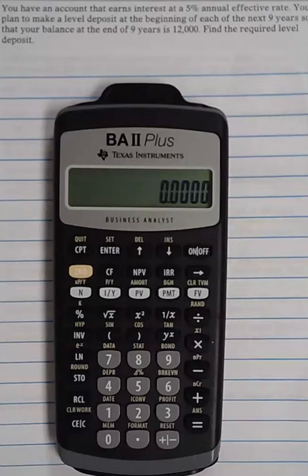We're going to use the calculator to help us solve an annuity due problem. In this case, we're given that the annual effective interest rate is 5%, and we want to know what level of deposits are needed at the beginning of each of the next nine years so that you have $12,000 in the account. Notice that it says the level of deposits are to be made at the beginning of each of the next nine years, and that's our clue that we have an annuity due problem versus an annuity immediate problem.